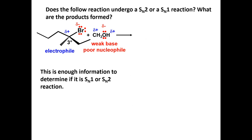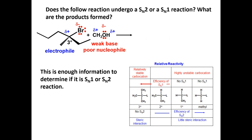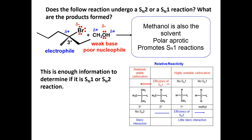This is enough information to determine if an SN1 or SN2 reaction will occur. The solvent is polar protic which helps promote an SN1 reaction. The alkyl halide is tertiary and will not undergo an SN2 reaction. This is an SN1 reaction.